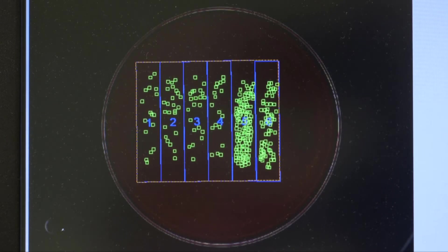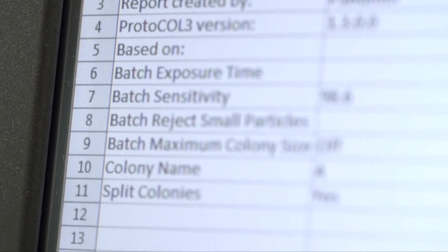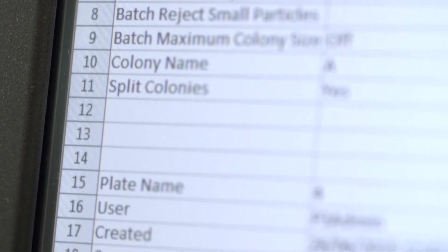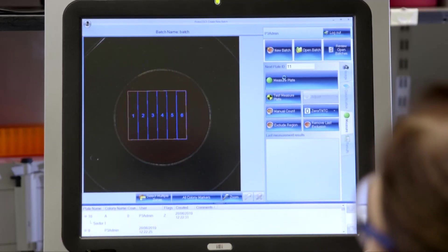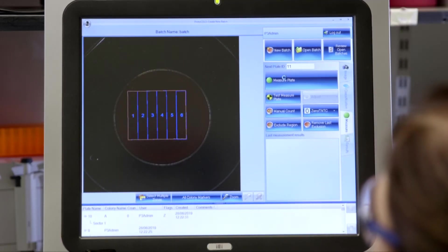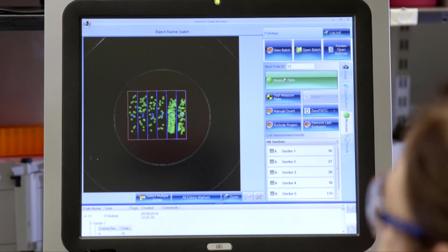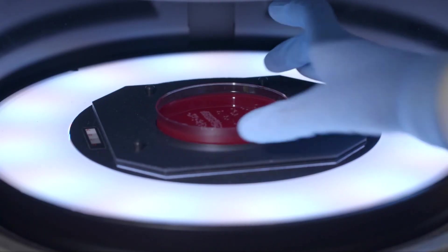They were also attracted to the idea of having a colony counter that could work with a variety of plate layouts and protocols all in one system. Since using the Protocol 3, they have found that having the computer take the image of their plate and automatically count the bacteria, they can do ten times more work in a day.